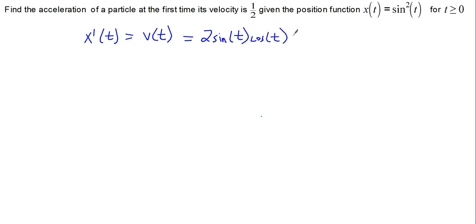We want to know when this is equal to one-half. Looking at it in this form will be difficult to solve, so we should note that 2 sine t cosine t is the same as the double angle formula for the sine of 2t. So we'll set sine of 2t equal to one-half.